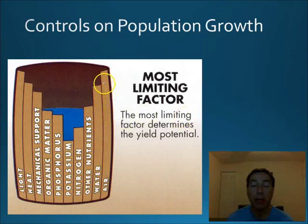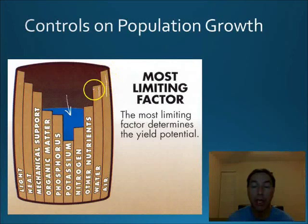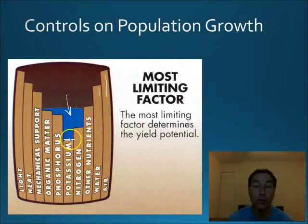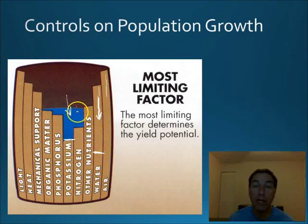The way to understand limiting factors is through the barrel analogy. Our population is the water in a wooden barrel. The population can only get as high as the shortest slat in the barrel. Each slat represents the amount of a particular factor. The barrel can only fill up to the lowest slat — in this example, potassium is the most limiting factor because it controls the population the most. Limiting factors can change over time; for example, if water decreases, the population level drops accordingly.